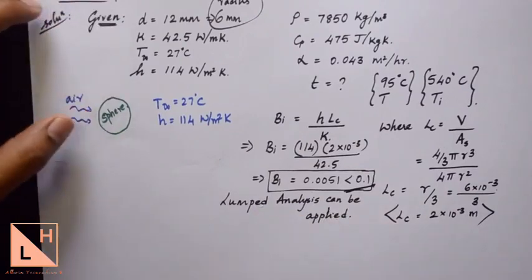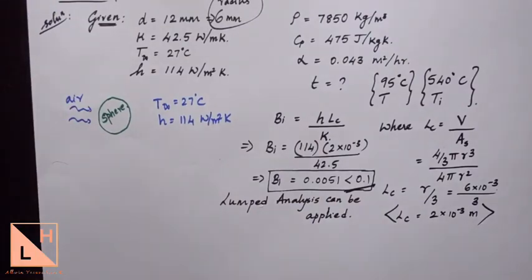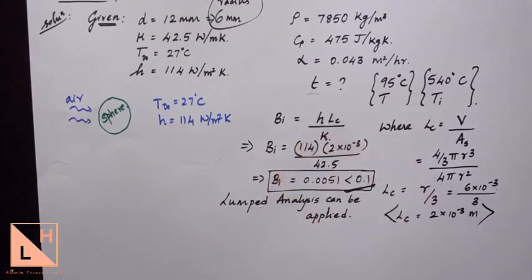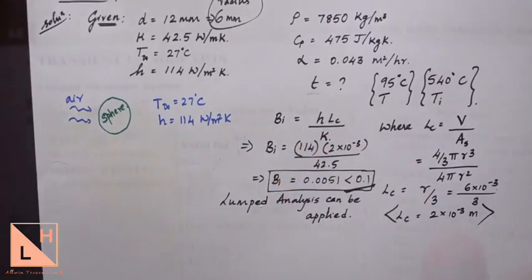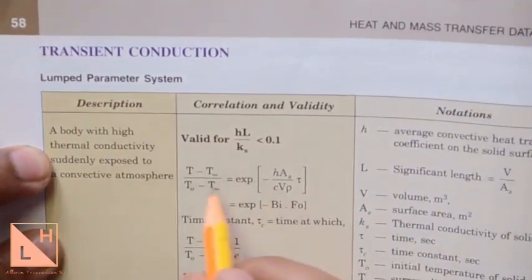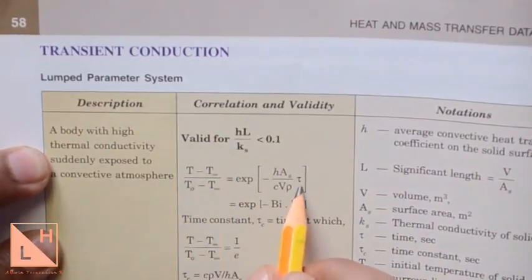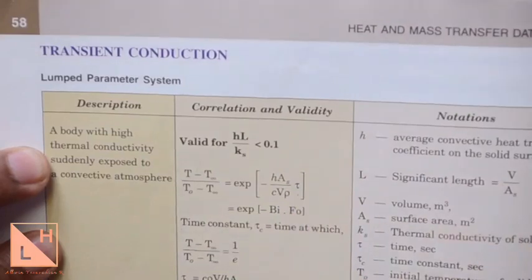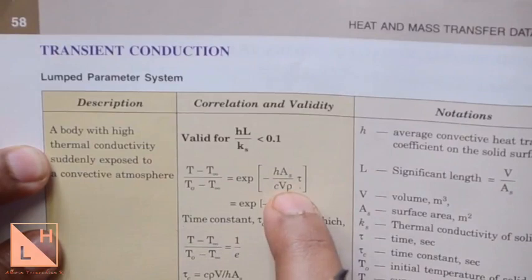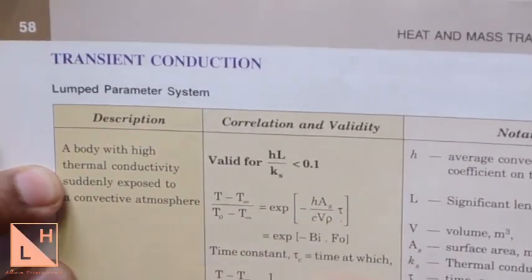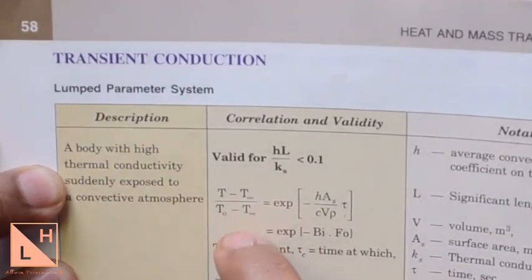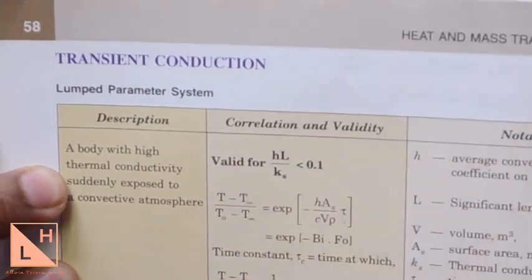According to lumped analysis, from the data handbook we have the formula for temperature distribution, because we need to find the time taken. This time is found as a parameter in the temperature distribution equation. In the data handbook 8th edition by CP Kodanraman, page 58, you will find this equation where time is given as tau. We are taking time as small t. We will use this equation to find the time for temperature change from 540 to 95 degrees Celsius.